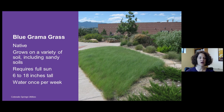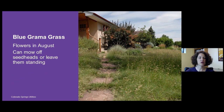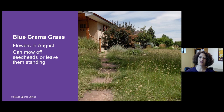Blue grama grass will produce its leaves throughout the spring and mid-summer, then start to produce seed heads in August. These seed heads rise above the blades of the grass and look like little eyelashes. Some people really like the look of the seed heads and can keep them in place all winter, or mow them off if preferred.